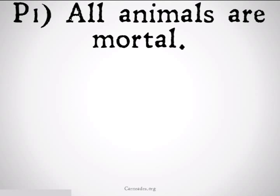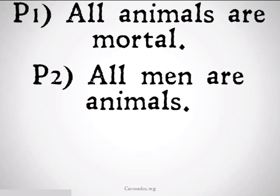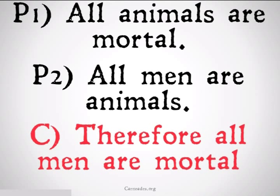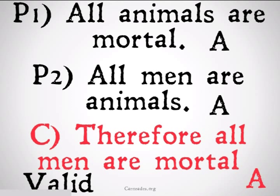What are categorical syllogisms? Well, they look like this. All animals are mortal, all men are animals, therefore all men are mortal. This is going to be an example of an AAA categorical syllogism, and this is in fact going to be a valid syllogism. It should be clear this has two premises and a conclusion.